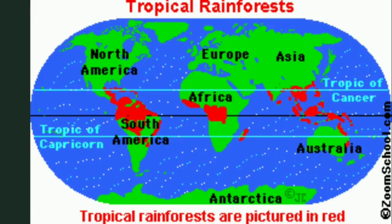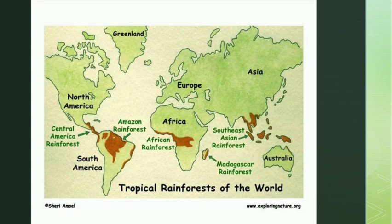Children, the rainforest along the banks of the river Amazon in South America is the largest tropical rainforest in the world. Tropical rainforests are also found in the southern part of North America, Central Africa, Southeastern Asia, and parts of Australia.